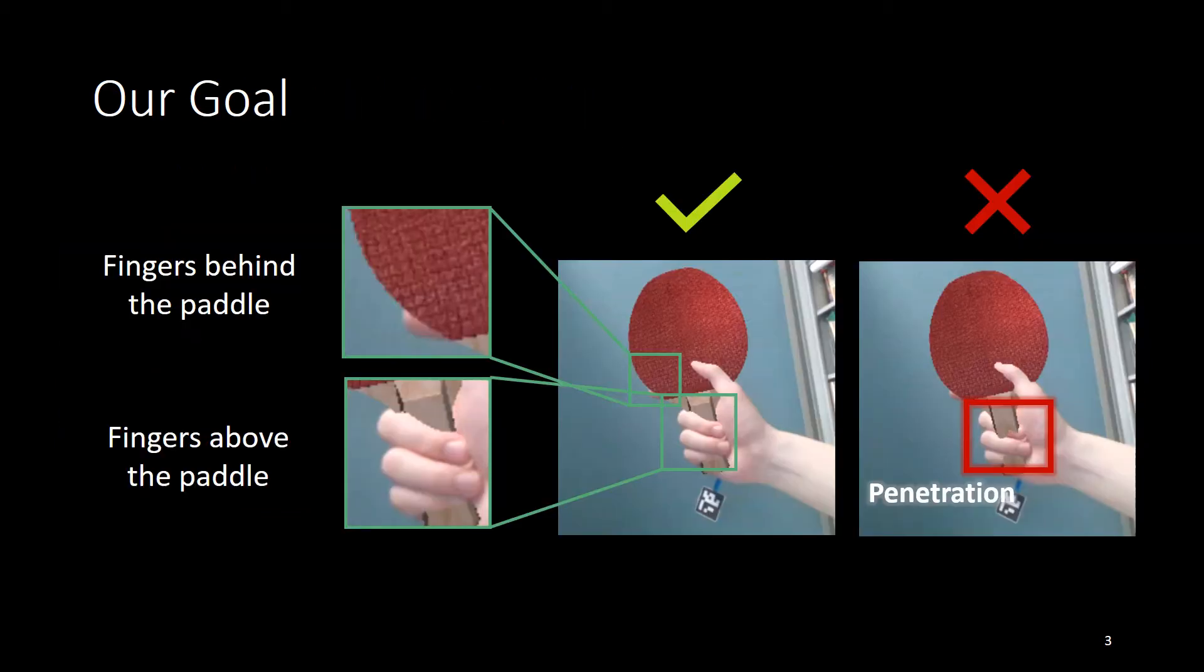What we would like to achieve is that user sees his hand through AR device, grab a virtual object and use it. We can then predict the correct occlusion relationship between the hand and the virtual object, and avoid hand object penetration.